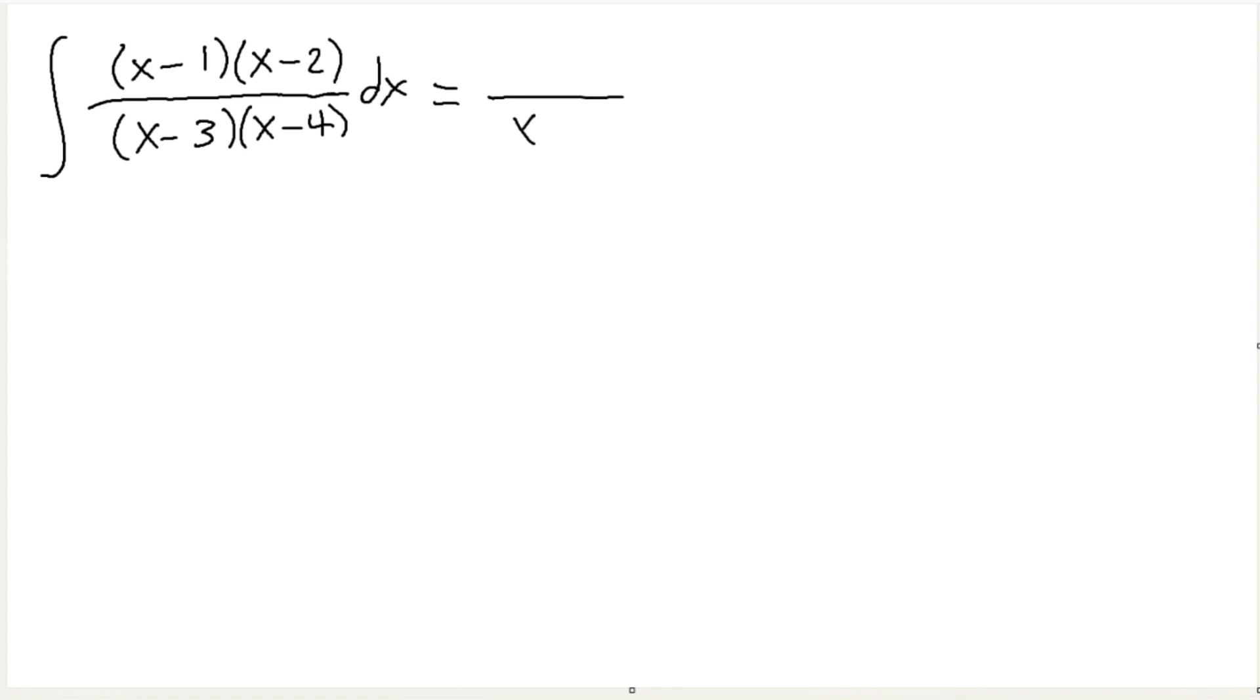Alright, so let's see. It's the Heaviside method. You just collect this fraction. Plug in 3, it's negative 1. Plug in 3 here, it's 2 times 1, 2. Let's see, 4. Plug in 4 here, it's 1. Plug in 4 here, it's 3 times 2. That's 6.